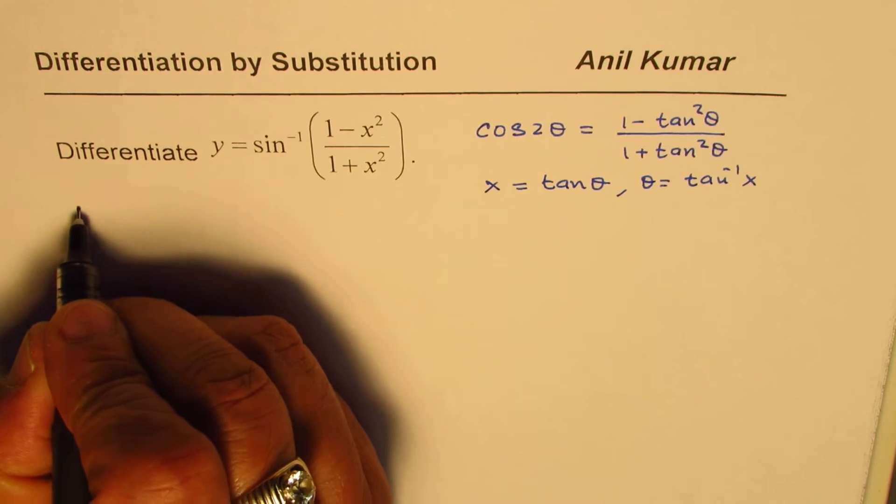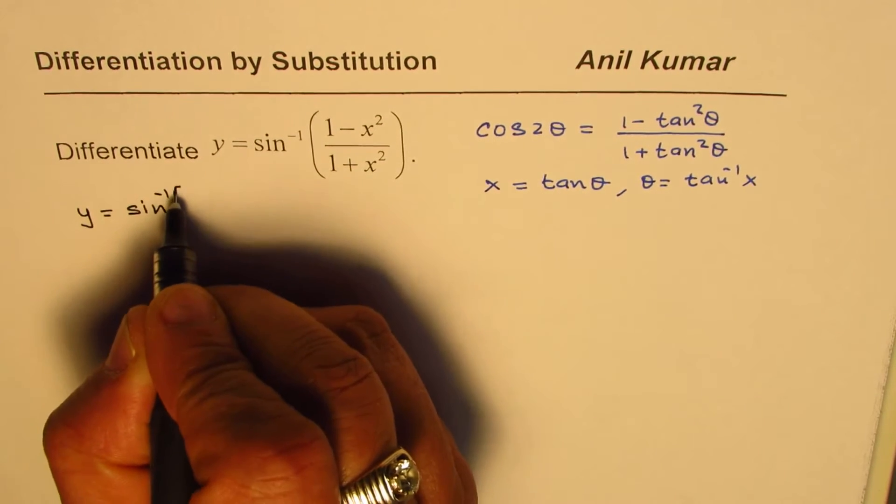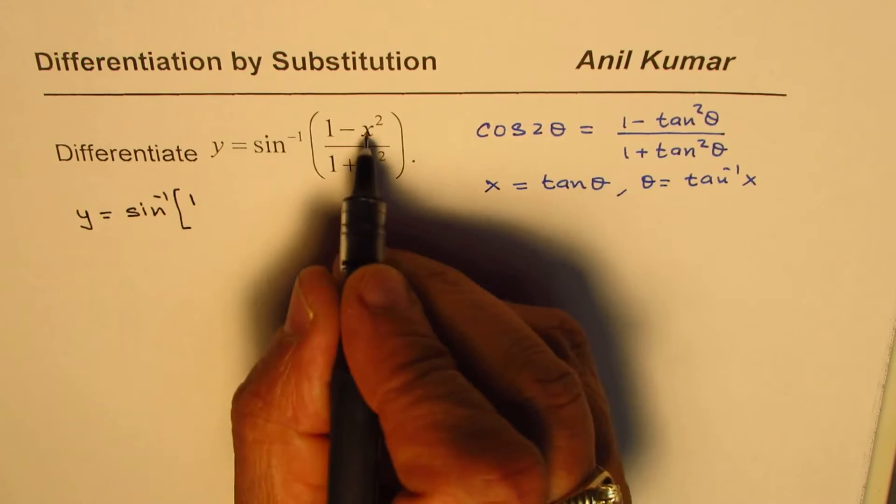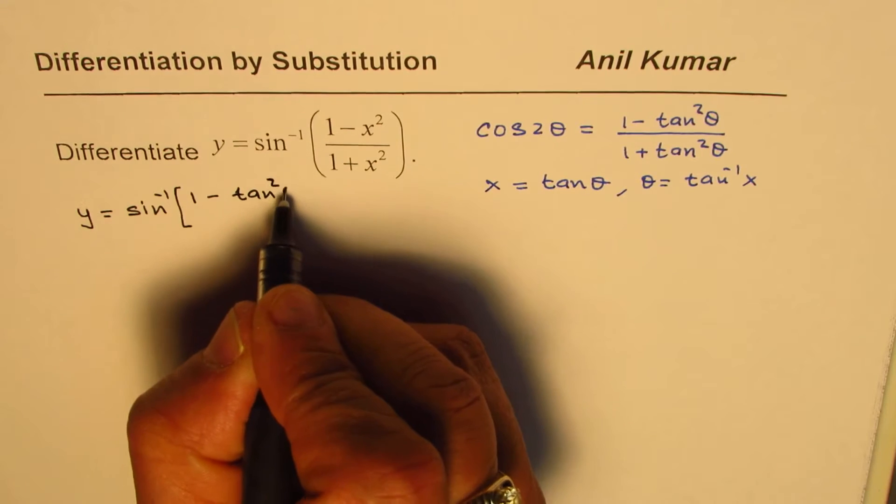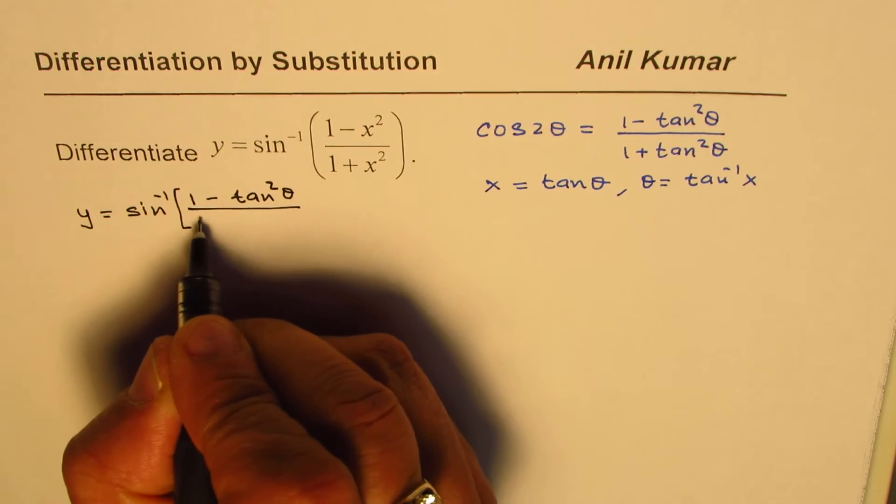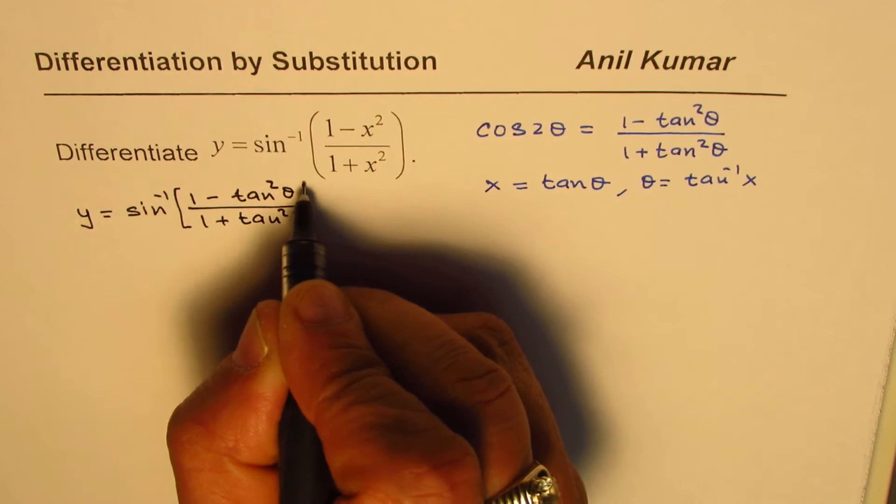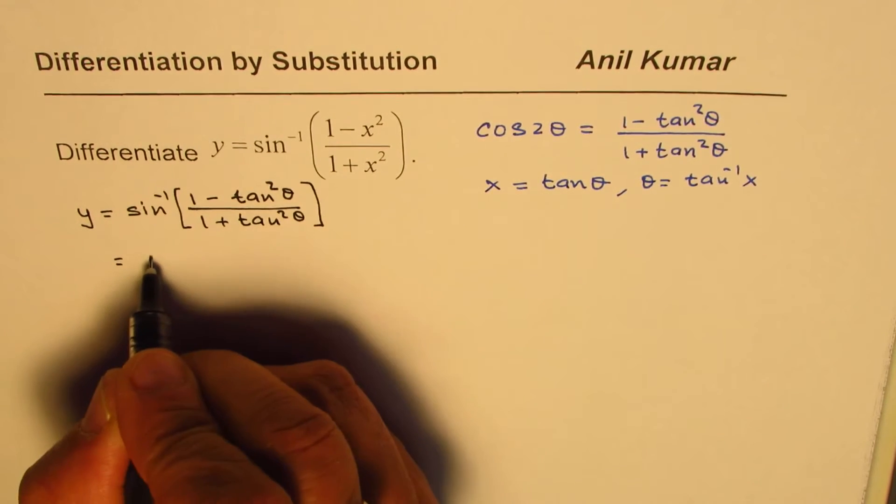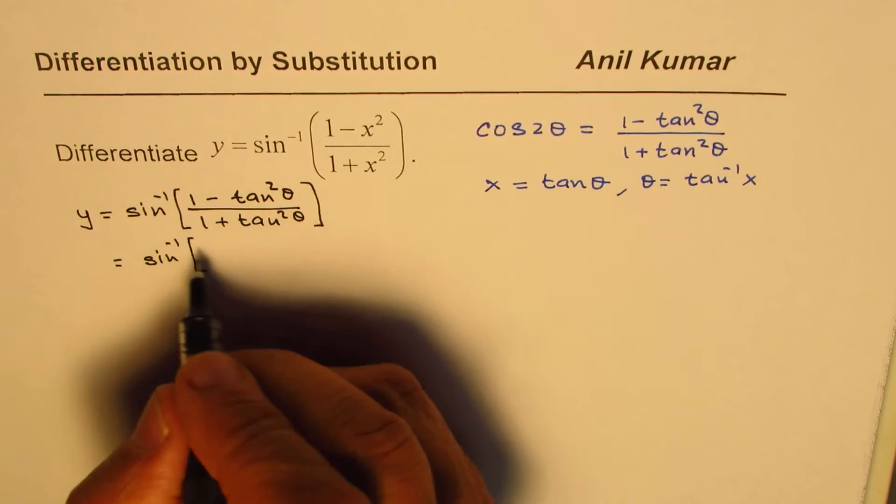We can write this question as y equals sine inverse of [(1 minus tan squared θ) over (1 plus tan squared θ)]. Now, that is equal to sine inverse of cos 2θ.